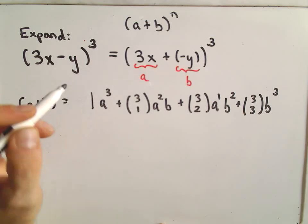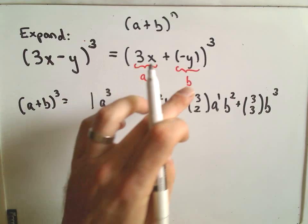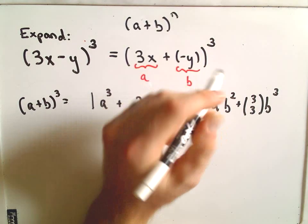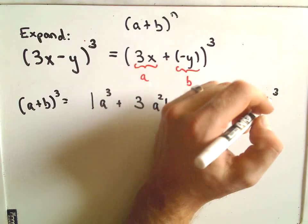It turns out that 3 choose 0 is just 1, 3 choose 1 turns out to be the number 3, 3 choose 2 also turns out to be the number 3, and 3 choose 3 also turns out to be the number 1.